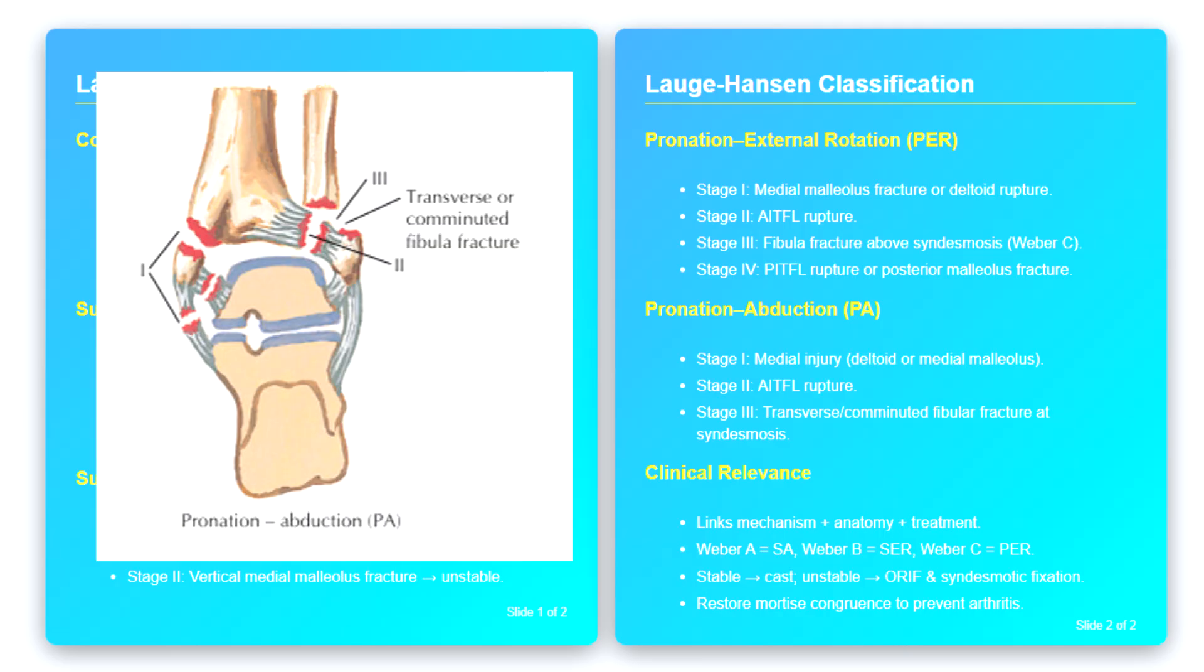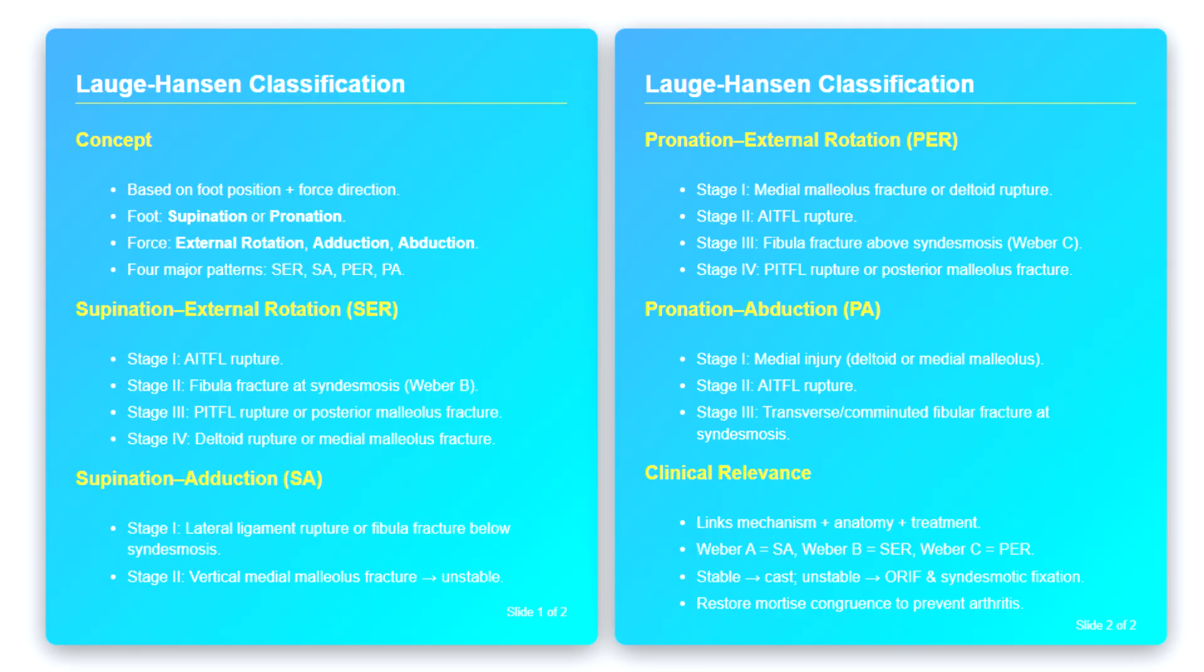Clinically, pronation abduction injuries produce widening of the ankle mortise and instability of the talus within the mortise. The transverse or comminuted fibular fracture, along with medial injury, make these patterns highly unstable and operative treatment is generally required.